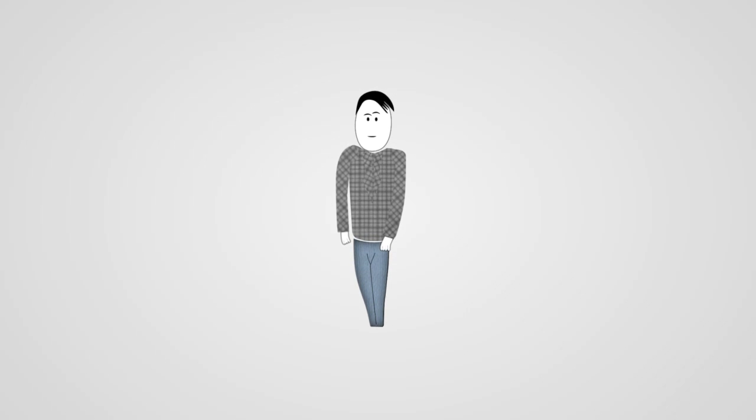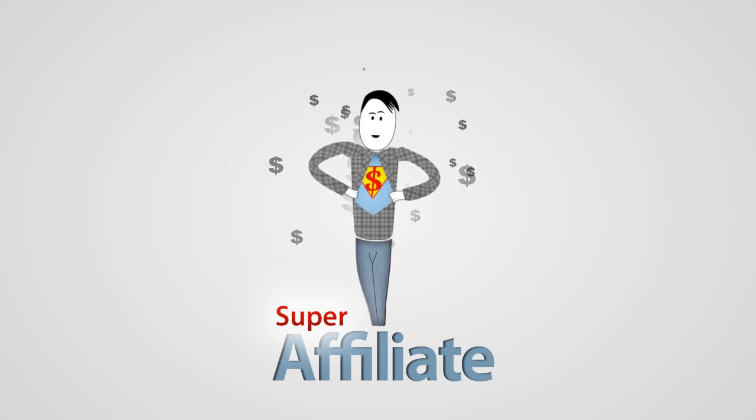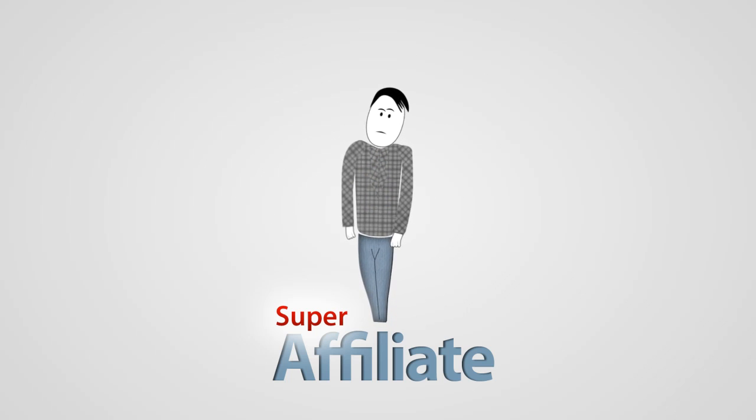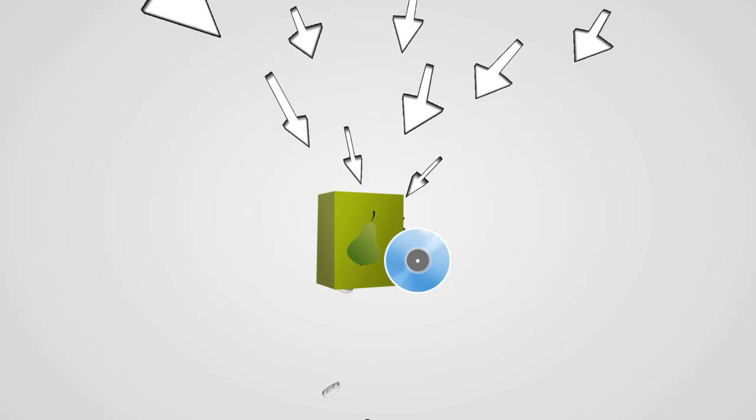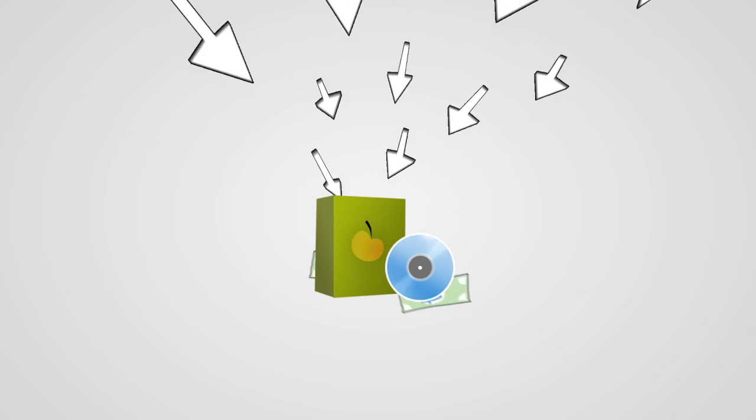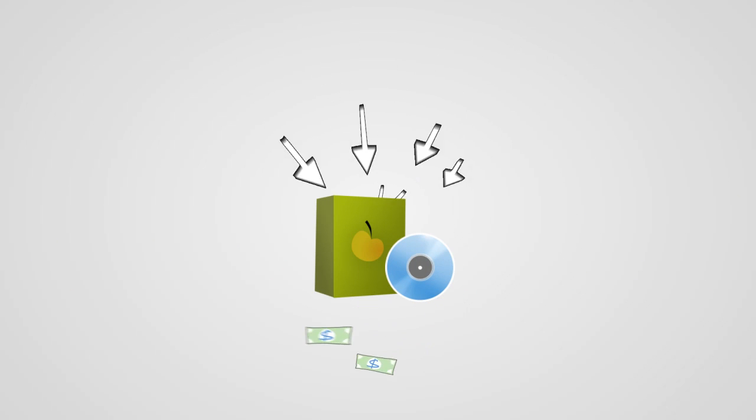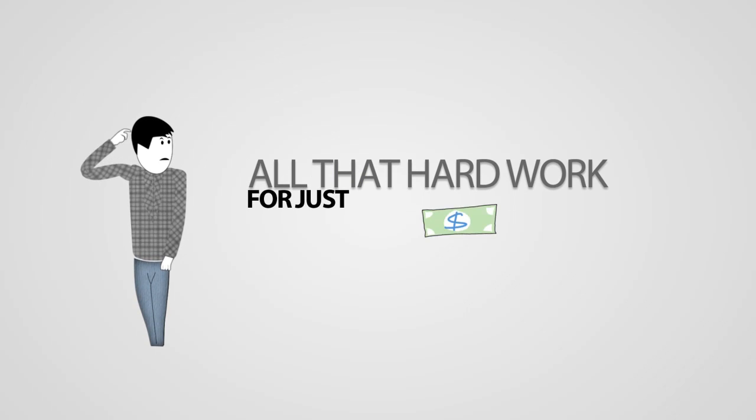Jim is what we like to call a super affiliate. He makes a lot of money online, but he's frustrated because the products he's been promoting just aren't converting anymore. And it seems that the ones that do convert only pay out a few dollars per sale, all that hard work, for just a few bucks.